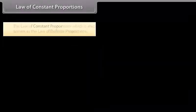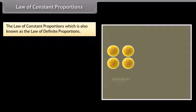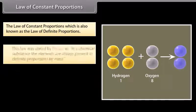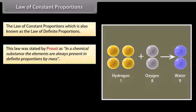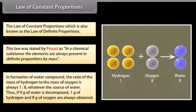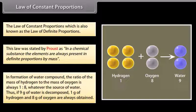Law of constant proportions, which is also known as the law of definite proportions. This law was stated by Proust: as in a chemical substance, the elements are always present in definite proportions by mass. In formation of water compound, the ratio of the mass of hydrogen to the mass of oxygen is always 1 is to 8, whatever the source of water.